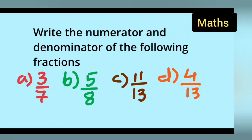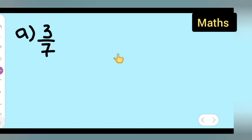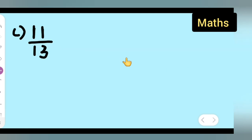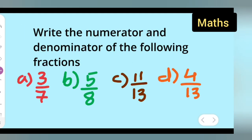Welcome to today's class of mathematics. Today's question is: write the numerator and denominator of the following fractions. The fractions given are 3 upon 7, 5 upon 8, 11 upon 13, and 4 upon 13. These are the fractions for which you'll have to write the numerator and the denominator.